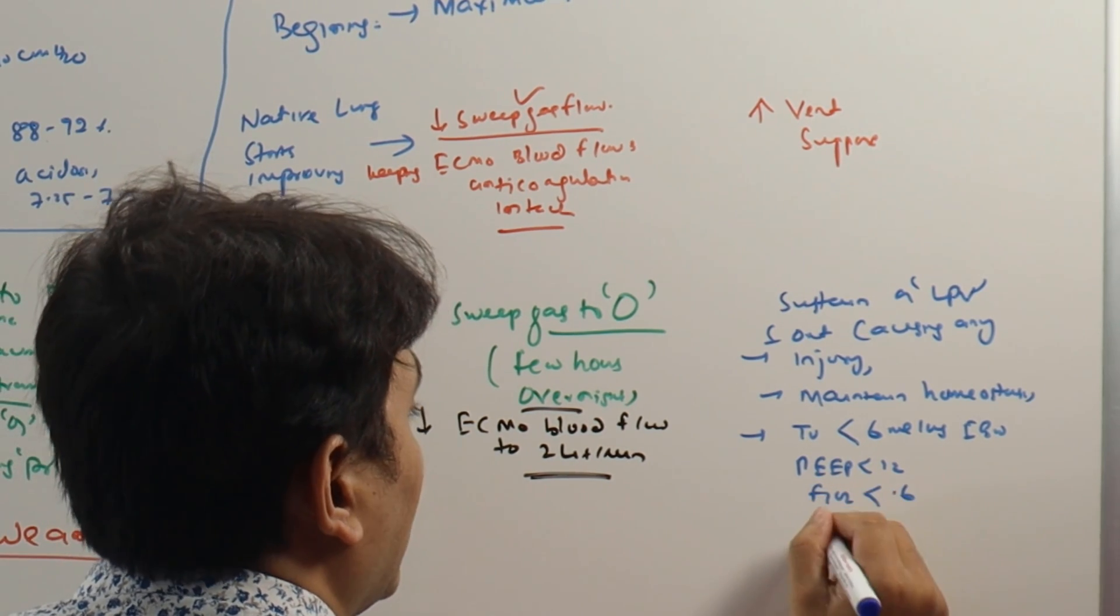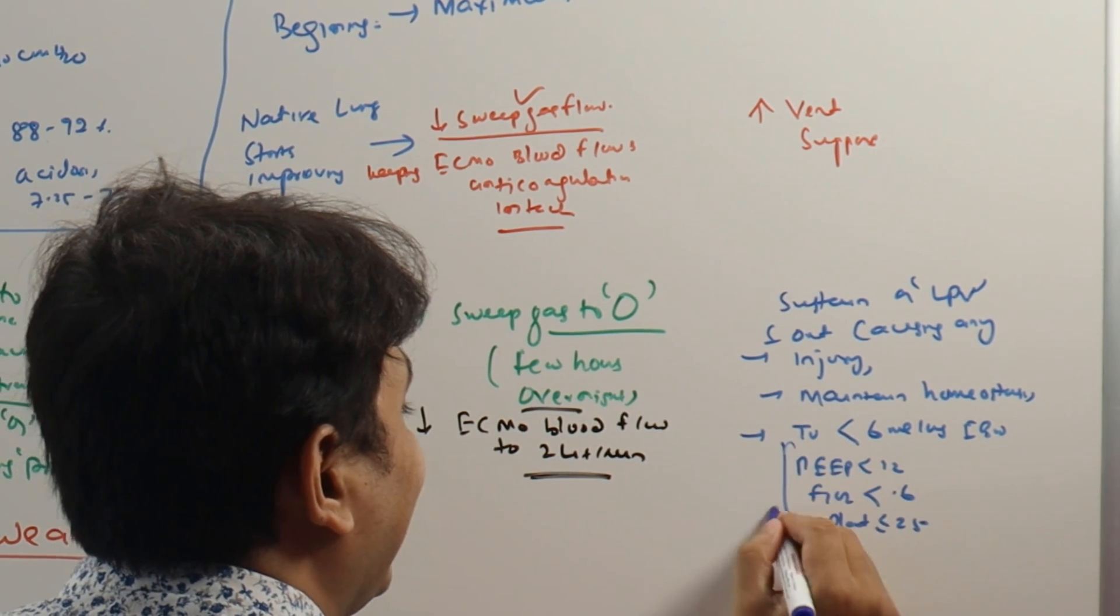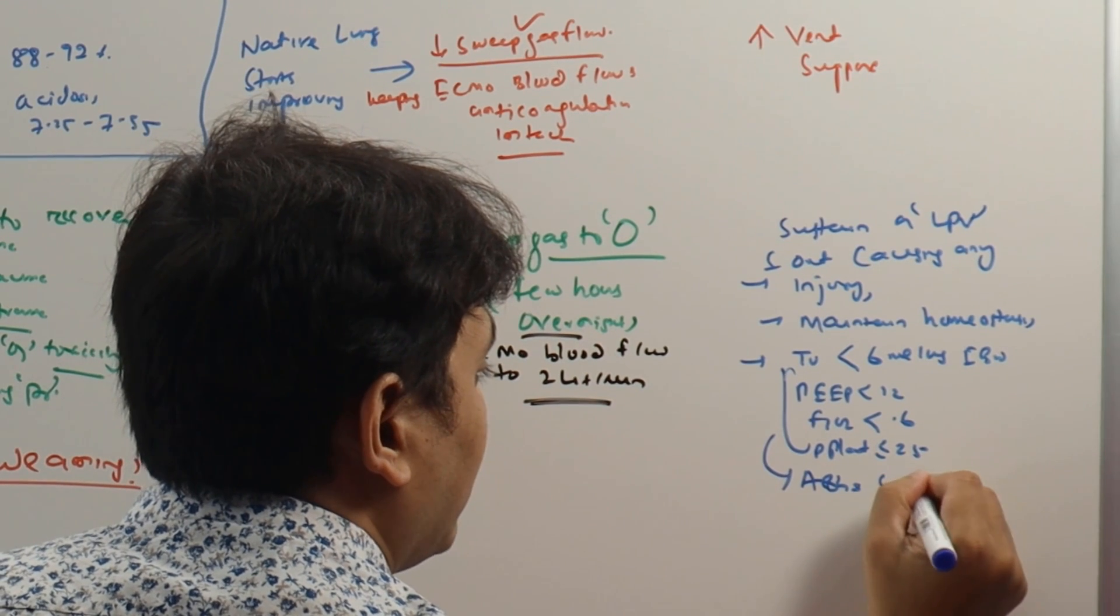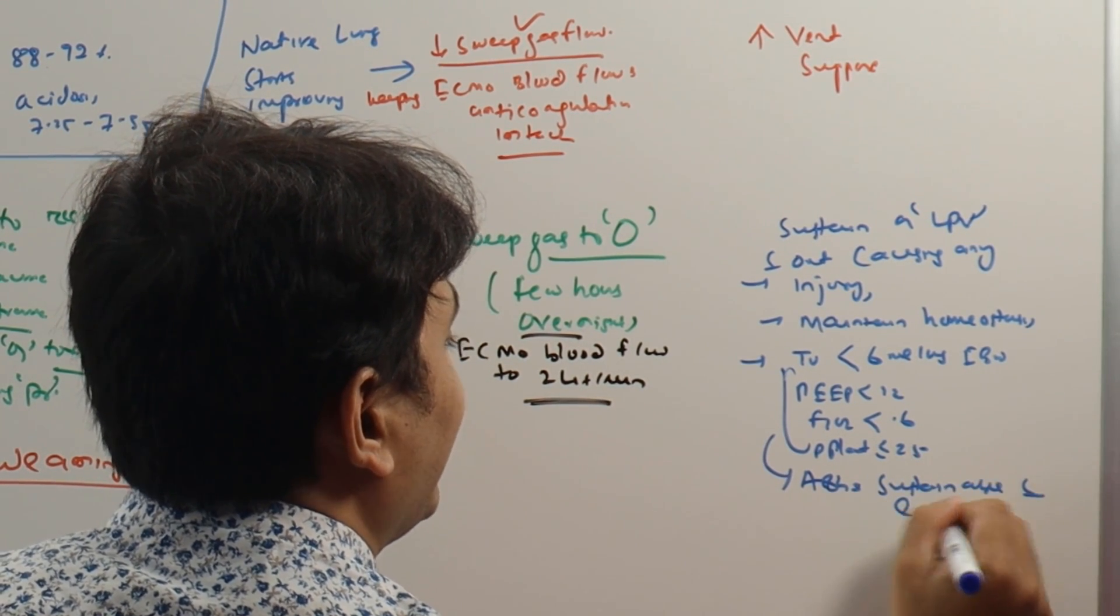FiO2 of less than 0.6, we can have a P plat of less than or equal to 25, and we can have an ABG which is sustainable with life using these settings.